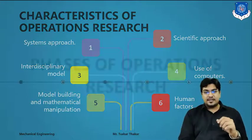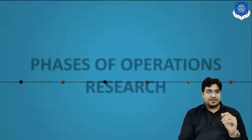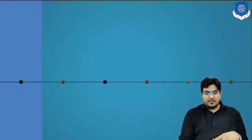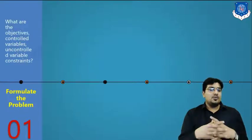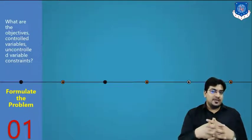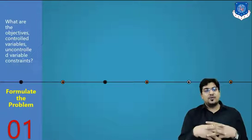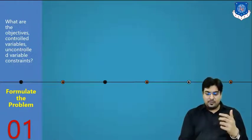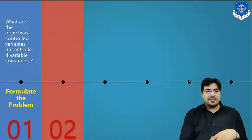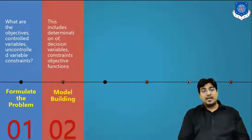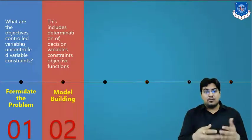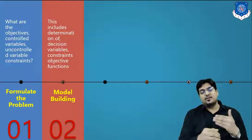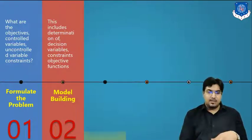So these are all the characteristics of Operation Research. Now we will learn the phases. The first phase is formulating the problem — you identify the objective, control variables, uncontrolled variables, and constraints. The second phase is model building — you build a model based on the available constraints and variables.